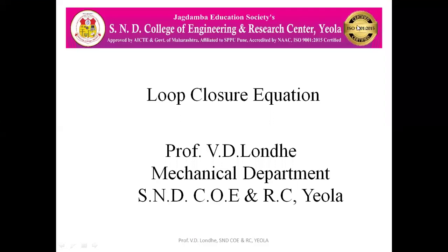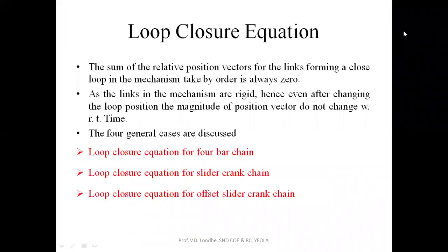Today we are going to see the loop closure equation and its application and uses in various mechanisms. The loop closure equation is defined as the sum of relative position vectors for the links forming a closed loop in the given mechanism. That summation is always equal to zero.